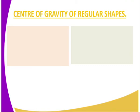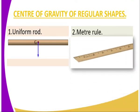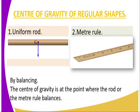Several regular objects' center of gravity can be determined, as their use is important in day-to-day life. For a uniform rod or meter rule, we find the center of gravity by balancing it at the center. You suspend it using a clamp and stand, tied at the center with a thread — the point where it balances is the center of gravity.